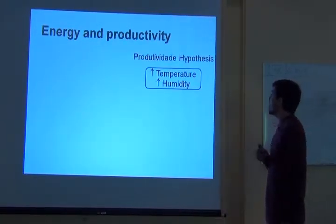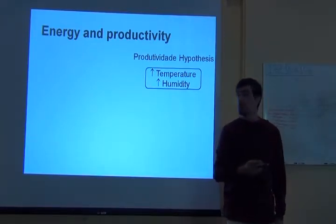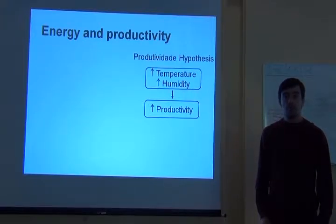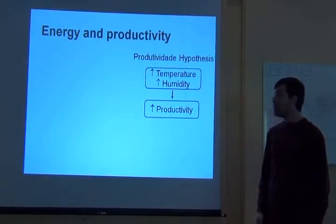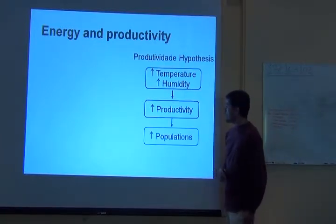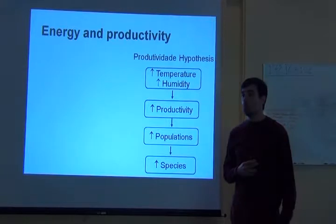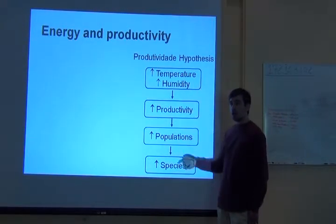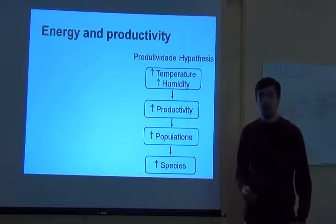The productivity hypothesis says that the higher the temperature and the more humidity there is in a given place, the more productivity we will have — like plants will do more photosynthesis, there will be more food for herbivores and carnivores, and larger the populations will be. And if everything goes as we expect, the larger the populations, the more species we will have. But this is still a missing link in this causal chain. We don't really understand why larger populations should promote speciation, and it's still a link that needs more empirical studies.